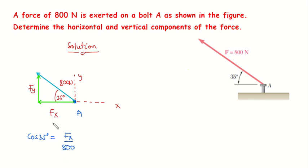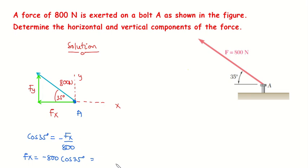In this case, the X component is pointing in the negative X axis direction, so you have to negate this value. At the end, FX equals minus 800 multiplied by cosine of 35 degrees. Simplifying, we get FX = -655.32 Newtons. That's the value for the X component.